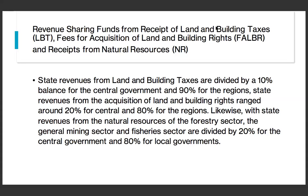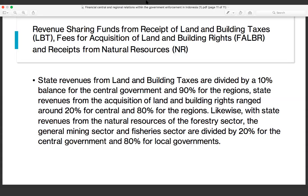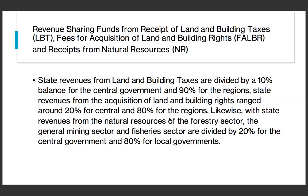The next topic is the Revenue Sharing Fund from the receipt of land and building taxes, fees for acquisition of land and building rights, and also receipts from natural resources. State revenue from land and building taxes is divided as 10 percent for the central government and 90 percent for the region. State revenue from the acquisition of land and building rights is around 80 percent for the region and 20 percent for the central government.